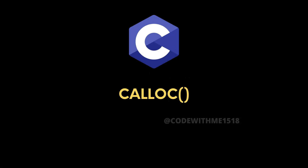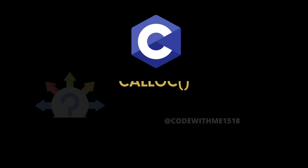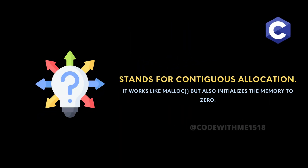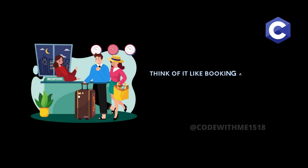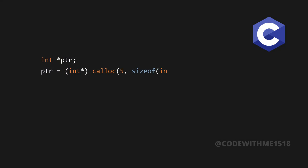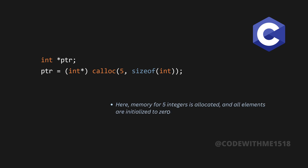Next, we have calloc, which stands for contiguous allocation. It works like malloc, but also initializes the memory to zero. Think of it like booking a hotel room with furniture already set up. Here's an example: int *ptr = calloc(5, sizeof(int)). Here, memory for five integers is allocated, and all elements are initialized to zero.